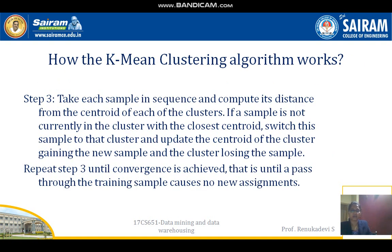To achieve clustering, repeat the following steps: Take each sample in sequence and compute its distance from the centroid of each cluster. If a sample is not currently in the cluster with the closest centroid, switch the sample to that cluster and update the centroids of both the cluster gaining the new sample and the cluster losing it. Repeat until convergence is achieved — that is, until a pass through the training samples causes no new assignments.